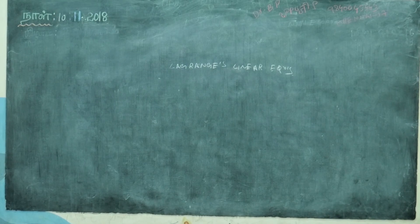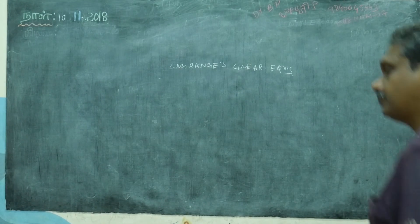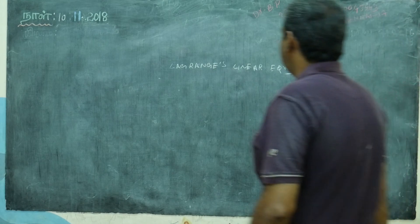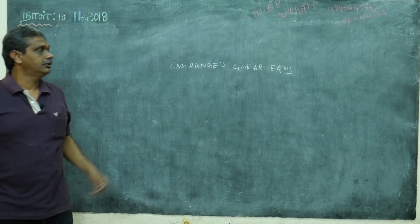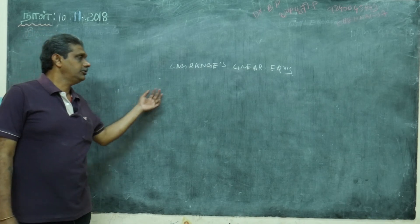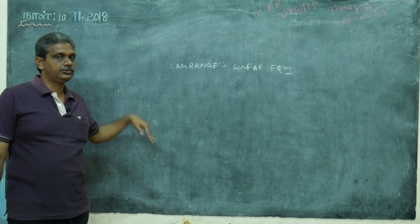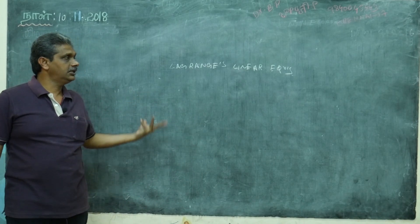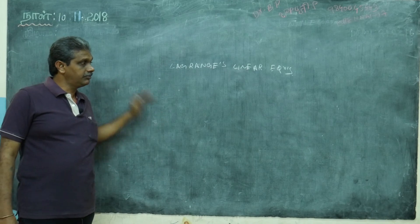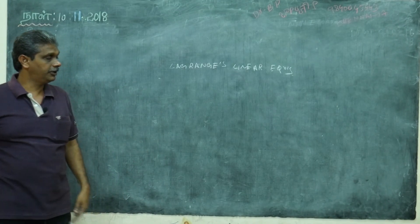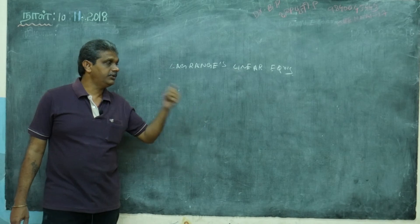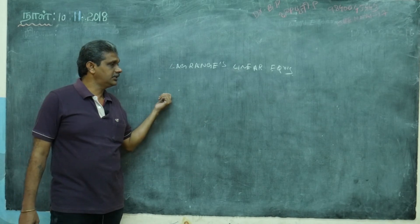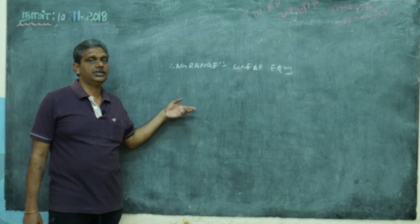Hi friends, this is your Dr. BP, alias Dr. Bapuji Pillepu. In the previous class we discussed Lagrange's linear equation method of grouping. If you are able to do it directly, you can write two things and integrate. But there are some problems — beautiful and important problems — where you won't get a direct combination of X, Y, Z.